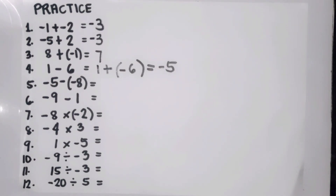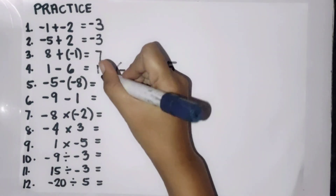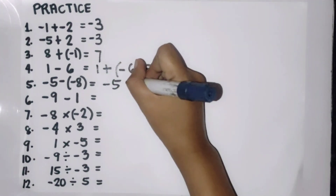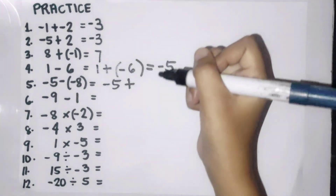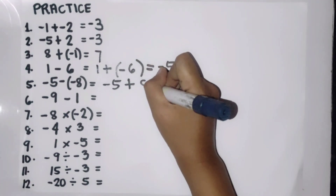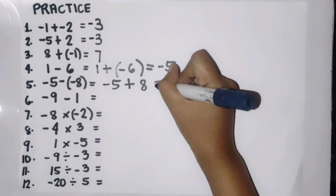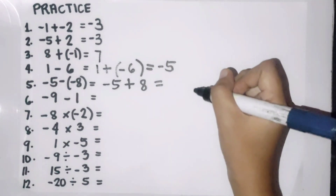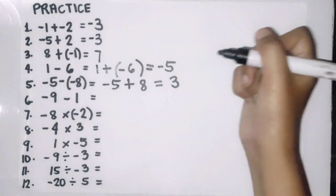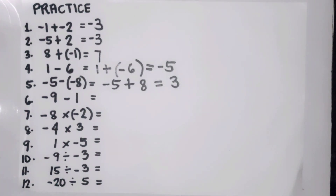Number five: negative five minus negative eight. Copy negative five, proceed to addition, and change negative eight to positive eight. Since they have different signs, proceed to subtraction — eight minus five is three. Since positive eight has the larger absolute value, our answer is positive three.